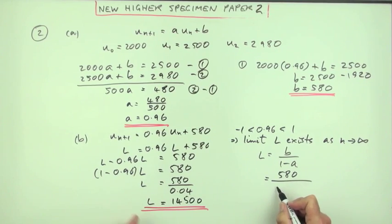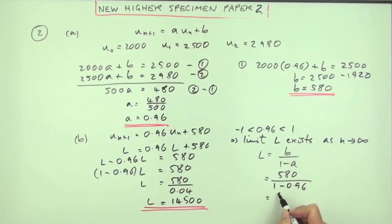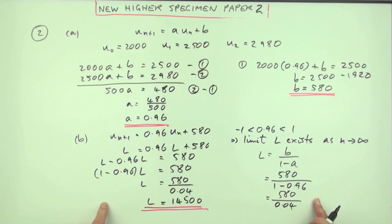I have started. Started, so finished. 580 over 1 minus 0.96. 580 over 0.04. And then of course, it's the same result.